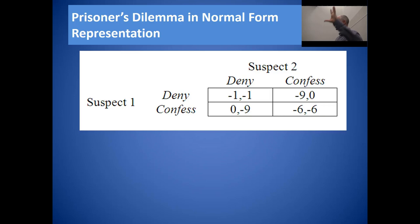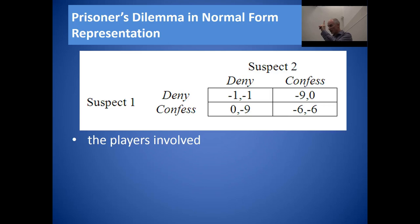That matrix describes exactly the prisoner's dilemma game I've just described. Any game described in its normal form will capture three basic principles. First, the players involved — in our case, suspect one and suspect two.